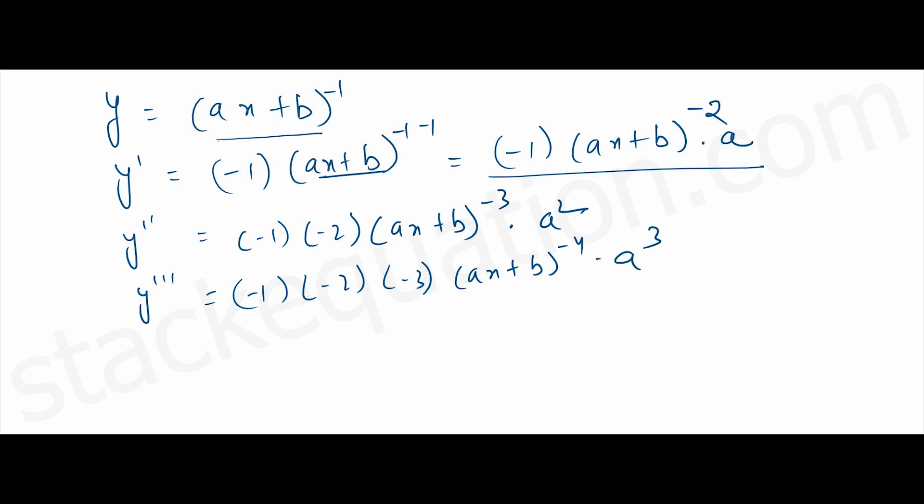So if you see the pattern here, for y double prime, it's minus 1 and minus 2, and here we have minus 3, and here we have 2. For y triple prime, it goes till 3, and the exponent here is minus 4, and the exponent of a is 3.